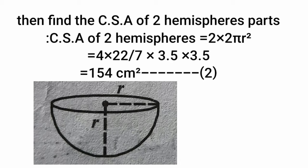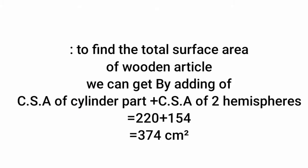Then find the curved surface area of the 2 hemispherical parts. Curved surface area of 2 hemispheres equals 2 × 2πr², that equals 4 × 22/7 × 3.5 × 3.5, which equals 154 cm². Take it as equation 2. Total surface area of the wooden article equals curved surface area of cylinder plus curved surface area of 2 hemispheres, that equals 220 plus 154, which equals 374 cm².